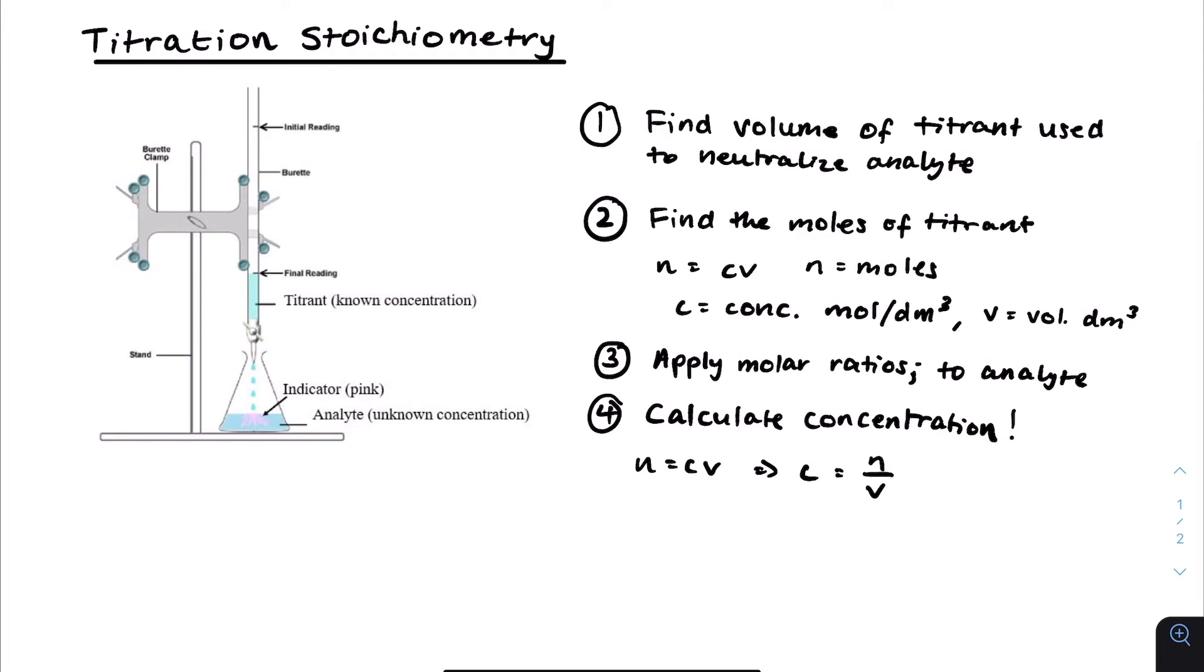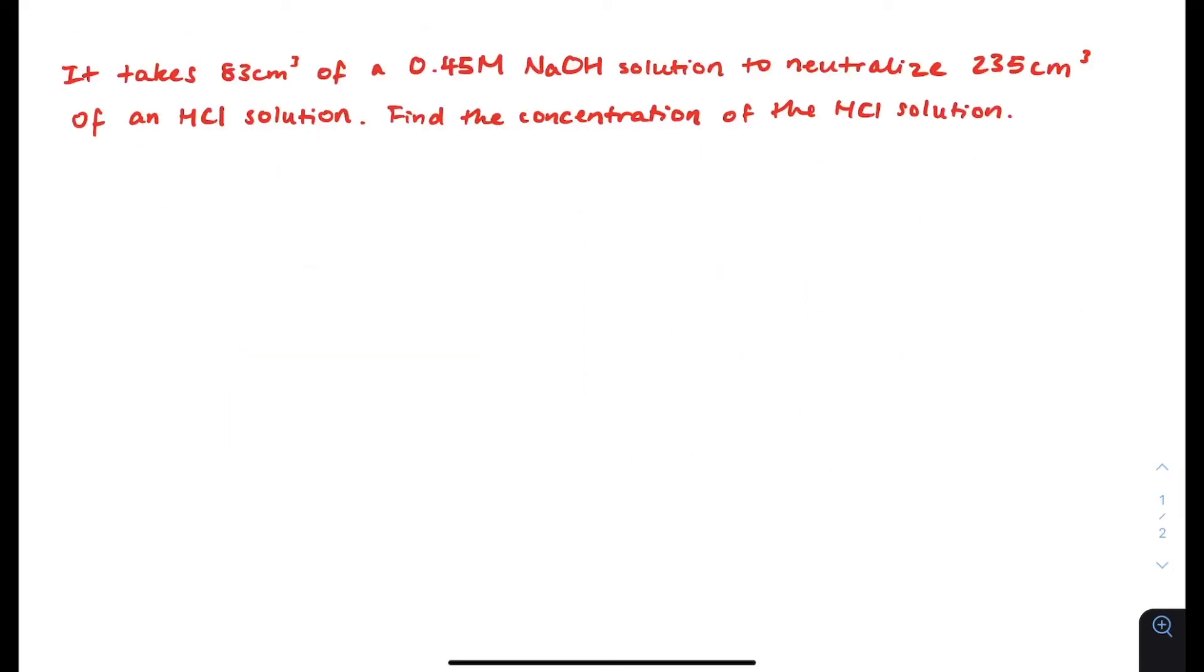That's basically it. That's all the steps you really need to know. You just need to be able to rearrange N equals Cv to ensure that you are able to work with many different scenarios. So let's look at an example, a simple example that you will need to know. This is an example of a question you might receive in chemistry that you should be able to solve. It takes 83 cubic centimeters of a 0.45 molar NaOH solution to neutralize 235 cubic centimeters of an HCl solution. Find the concentration of the HCl solution.